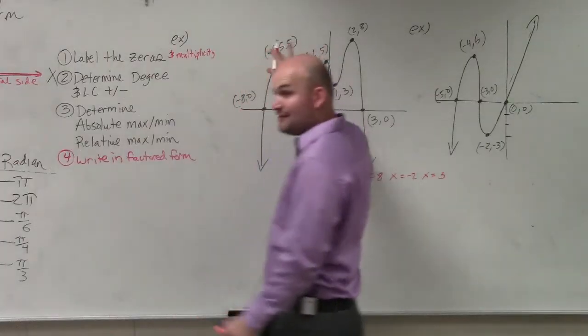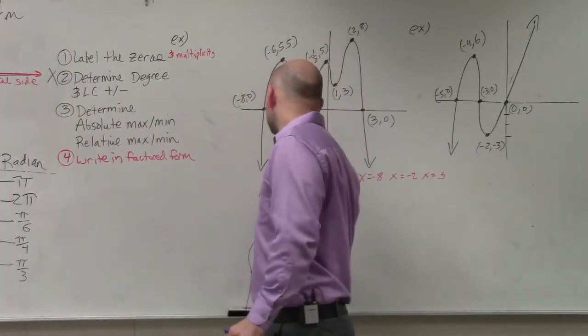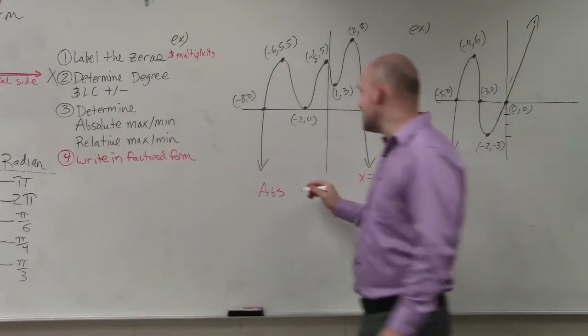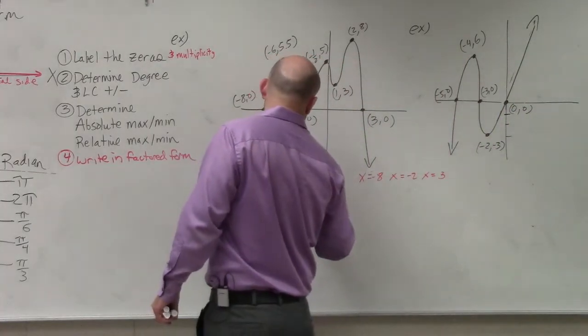So since this graph has a high point, the absolute max, which I'll just say abs, the absolute max occurs at the point 2 comma 8.